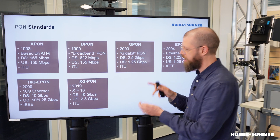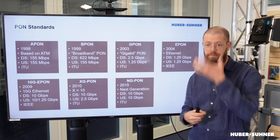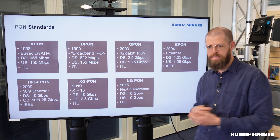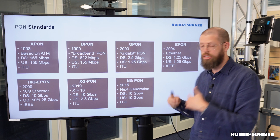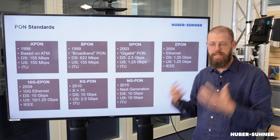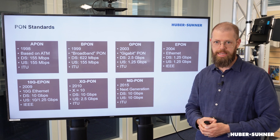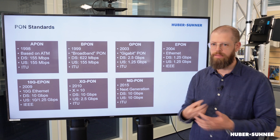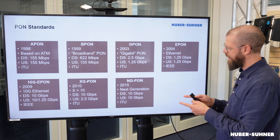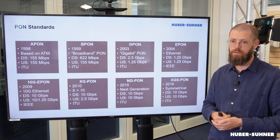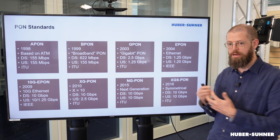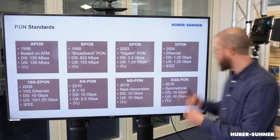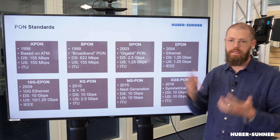A few years passed again, and in 2015 NG-PON2 — as in Next Generation PON — was released, with both 10G upstream and downstream. Importantly, the overall network throughput is actually 40 gigabits per second, achieved by using a combination of Timing and Wavelength Division Multiplexing, or TWDM for short. Shortly after, in 2016, XGS-PON was released — S as in Symmetrical — providing symmetrical 10G down and upstream, whereas XG-PON had 10G downstream but only 2.5G upstream.